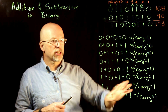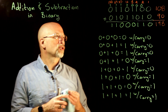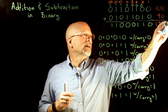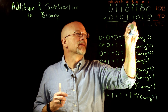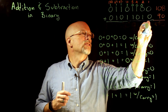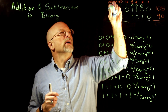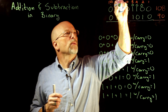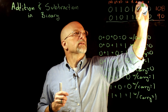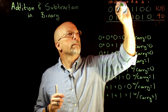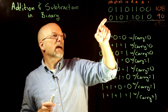If this makes sense, you can do addition in binary. Now what about subtraction? Let's clear this and instead of doing addition, we're going to do a subtraction — let's subtract 90 from 108 and see what happens.